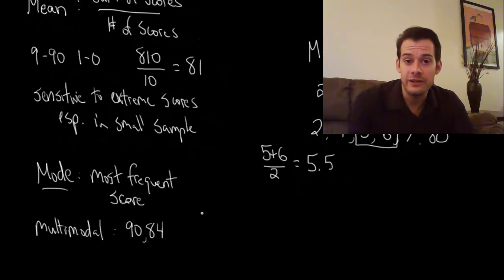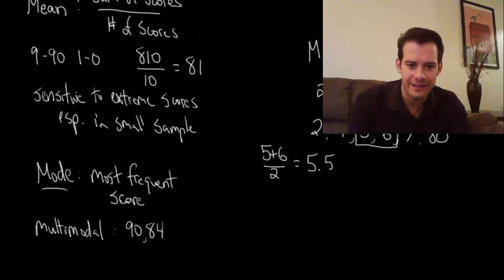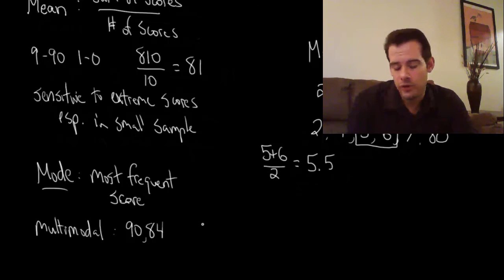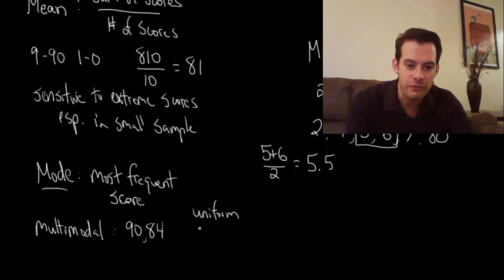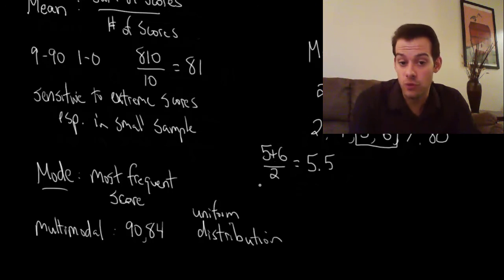You might also ask: what if none of the scores is most frequent — what if each score occurred only one time? Like in an example with 2, 4, 5, 7, 80 — what's the mode? In that case, all of them are the mode, or you could say none of them are the mode. The way of expressing that is to say it's a uniform distribution, meaning each score was equally frequent. And if each score had occurred twice, it would still be called a uniform distribution.